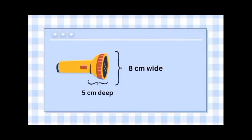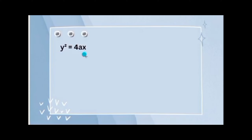This is the image of the problem. This is the surface — it's 8 cm wide and 5 cm deep. Since our paraboloid is open to the left and our values are positive, the formula that we are going to use is y squared equals 4ax.